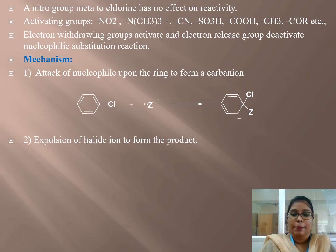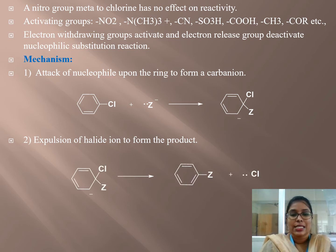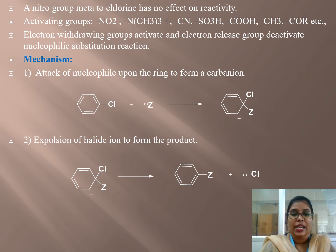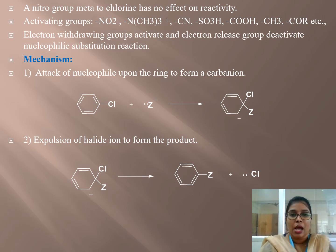The second step is the expulsion of the halide ion to form the product. The carbanion expels the chloride ion, and the nucleophile bonds to the benzene ring, displacing the halogen atom. In this way, the nucleophilic substitution of aryl halides occurs through this two-step mechanism — first carbanion formation, then halide expulsion — converting chlorobenzene into phenol by the bimolecular displacement mechanism.